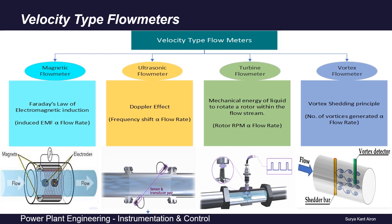The second type is ultrasonic flow meters that utilize the Doppler effect — the variation in sound frequency is calibrated to calculate fluid velocity. The third type is turbine flow meters, in which the mechanical energy of fluid is used to rotate a rotor placed in the fluid path; the RPM of the rotor is measured using a proximity switch, and this RPM is proportional to fluid velocity. The fourth type is vortex flow meters, where an obstruction called a vortex shedder is placed in the fluid path, generating vortices detected by a vortex detector.